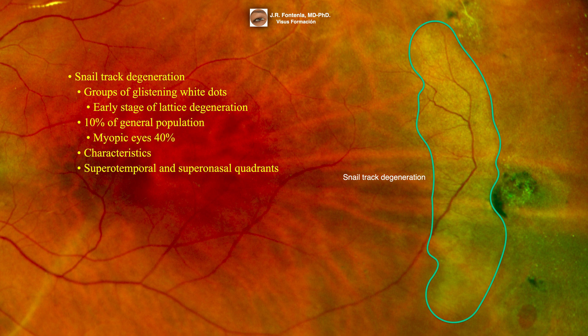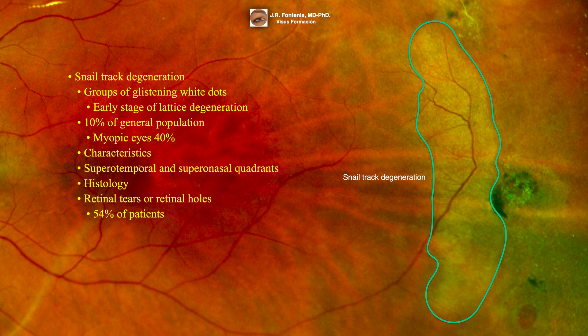It is more often found in the superior quadrants — superior temporal and superior nasal quadrants. Histologically, this lesion consists of a degeneration of the neural elements of the retina, leading to atrophy of the tissues with lipid deposits in the internal retinal layers. Complications may lead to retinal tears or retinal holes in up to 54% of patients. OCT findings show irregular retinal surface, vitreous destruction, and vitreo-retinal adhesions with traction at the margins.